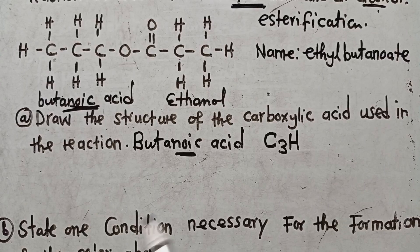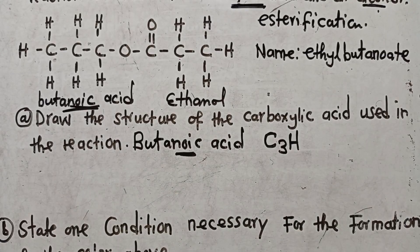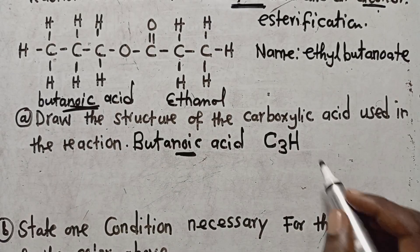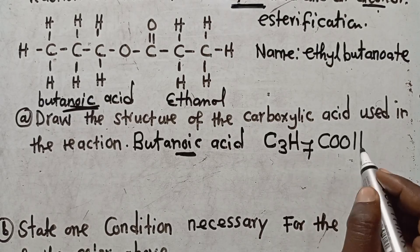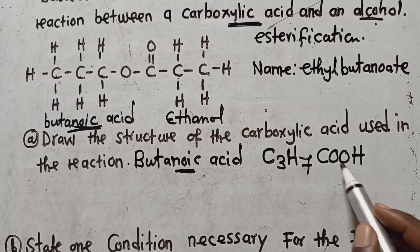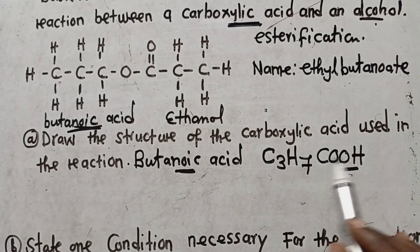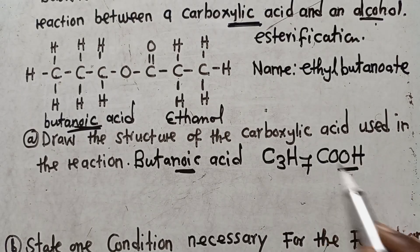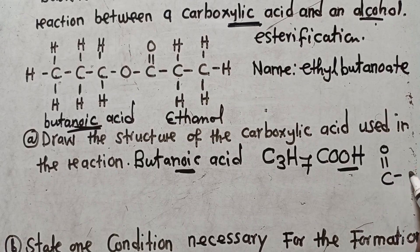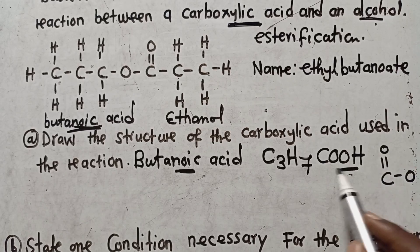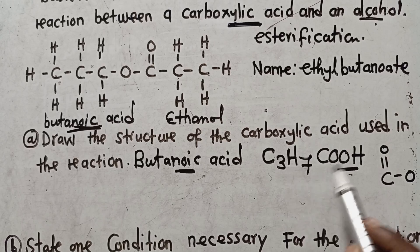The acid that is used here — we count: one, two, three, four, five, six, seven — so we say seven hydrogens. Then we write COOH. That is COOH. This is the reason why we are calling this a carboxylic acid — the functional group of any carboxylic acid is COOH. So we must have COOH, then we write the chemical formula.